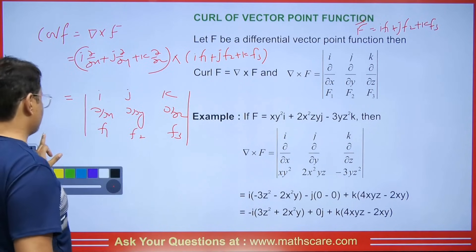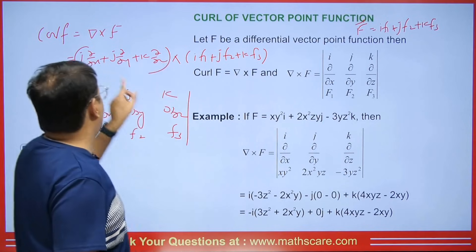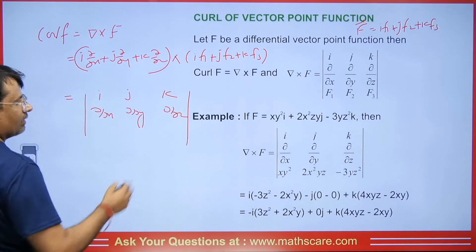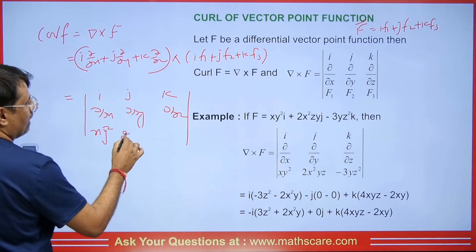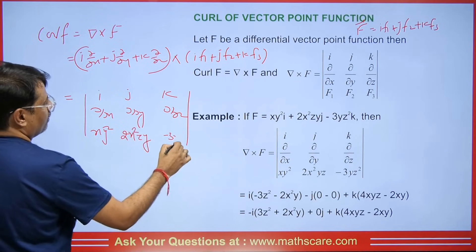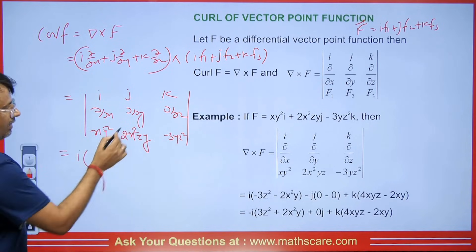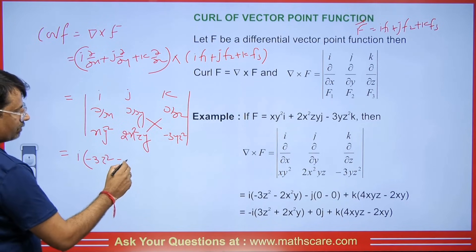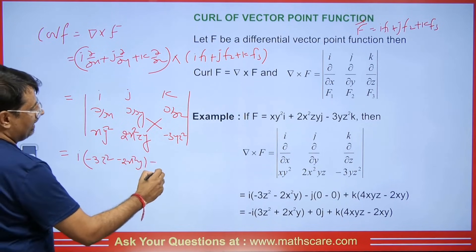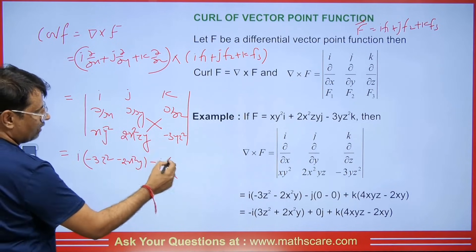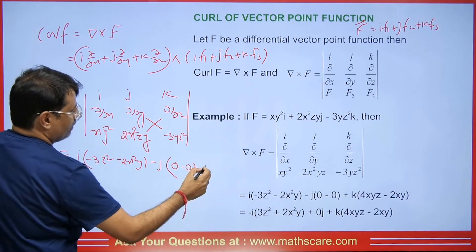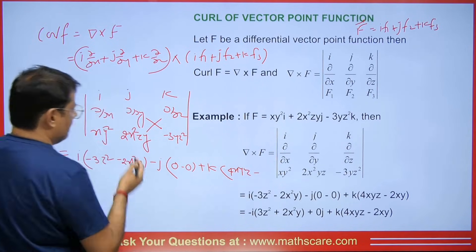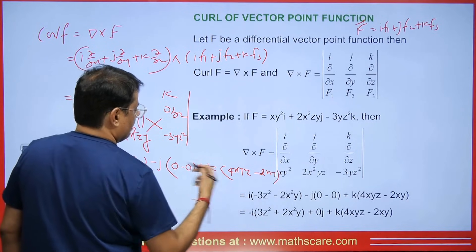For example, given a specific f, we set up the determinant with coefficients xy², 2x²zy, and −3yz². We expand: for the i-component, ∂(−3yz²)/∂y = −3z² minus ∂(2x²zy)/∂z = 2x²y; for the j-component, the x and z derivatives give 0; and for the k-component, ∂(2x²zy)/∂x = 4xyz minus ∂(xy²)/∂y = 2xy. Taking −1 as common from the i-component gives −(3z² + 2x²y)i + 0j + (4xyz − 2xy)k.